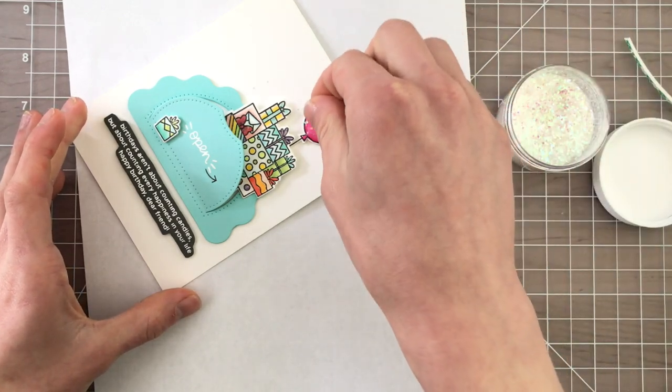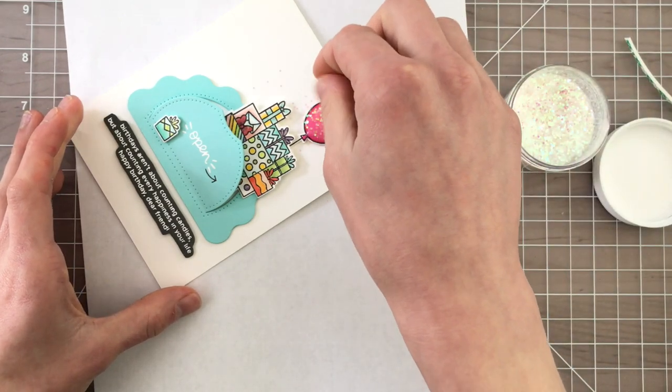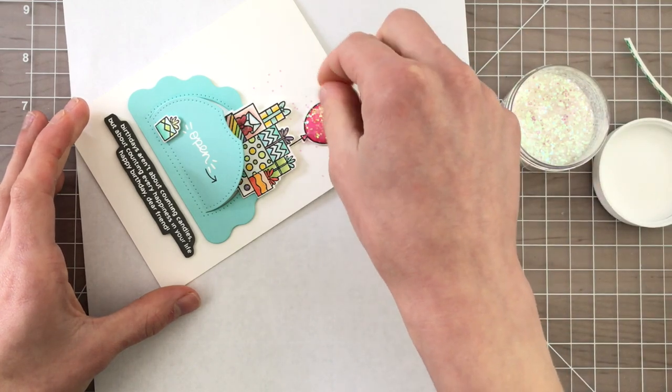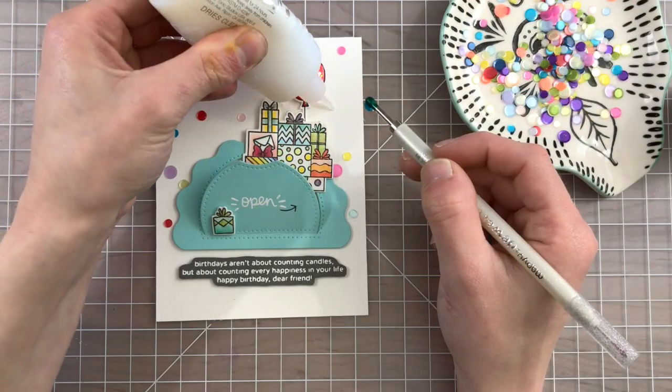I just picked up a pinch and sprinkle it over top of the balloon. Once the glossy accents dries that will embed those little glitter pieces inside of the adhesive.